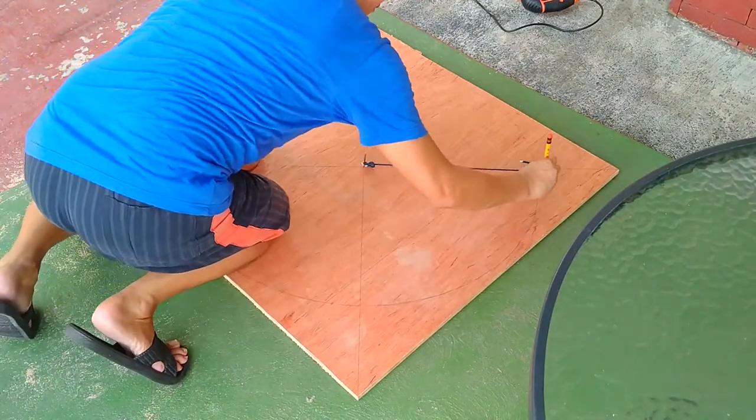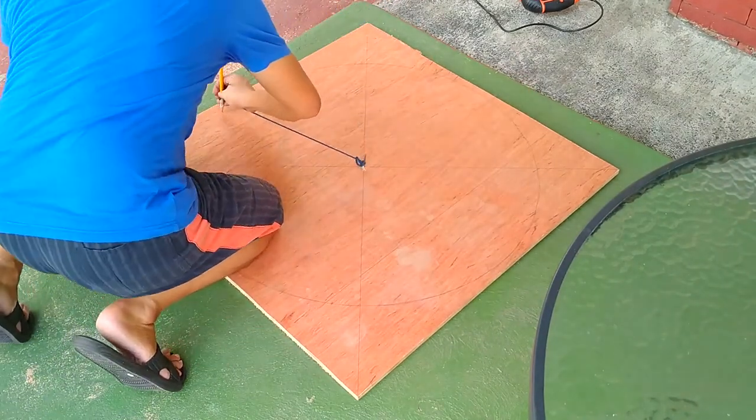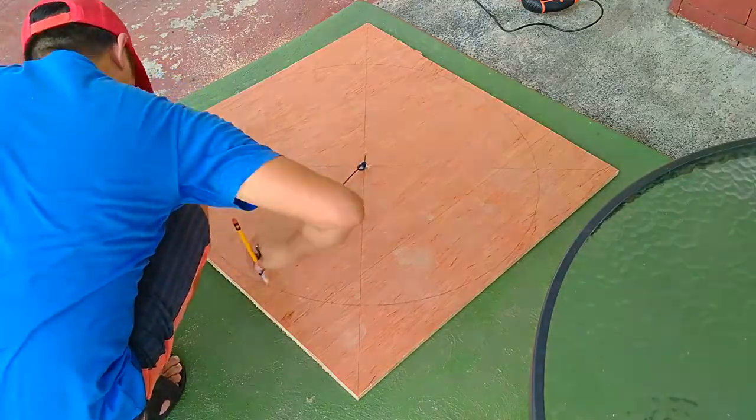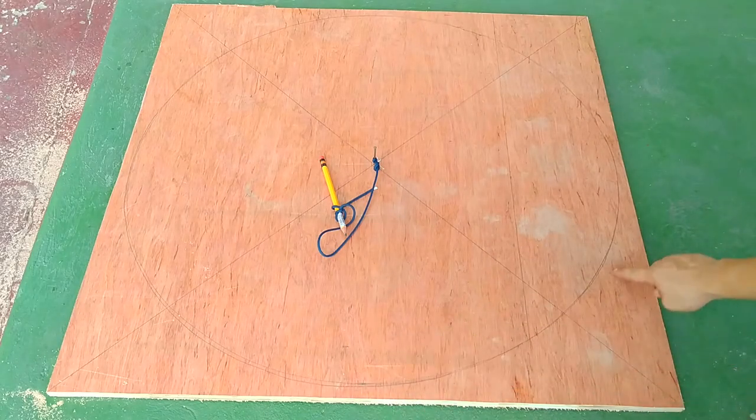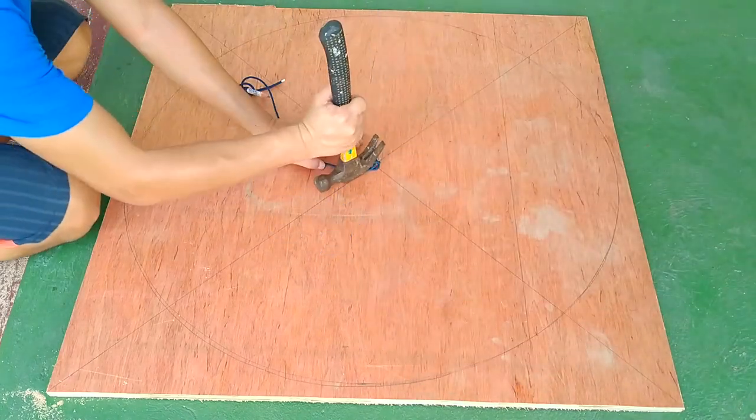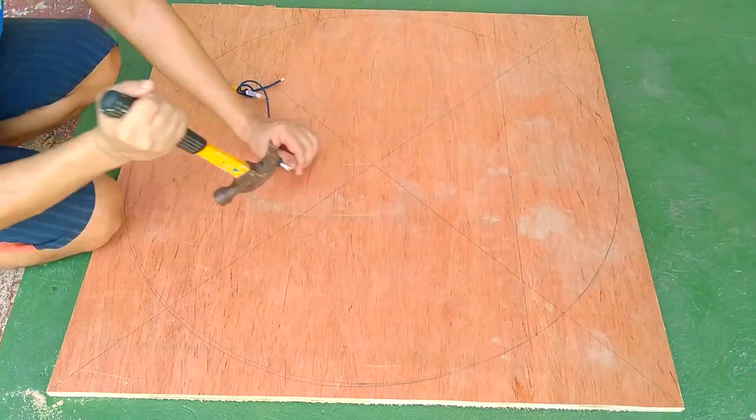I suggest making at least two passes, so that the pencil mark is heavy enough to easily see during cutting. As you can see, our circle is easily seen on this wooden square. Now it's time to remove the nail. It has served its purpose.